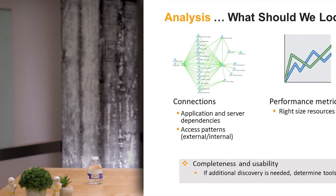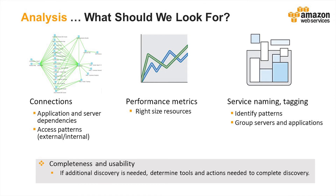From the vast amount of portfolio data collected, we need to extract key pieces of information to form a migration plan. Connections is a critical piece — it helps determine application and server dependencies and also helps identify access patterns. Performance metrics are another factor to help right-size resources in the cloud. Additionally, using service naming conventions, tags, and other host metadata can help identify patterns and group servers and applications for migration.